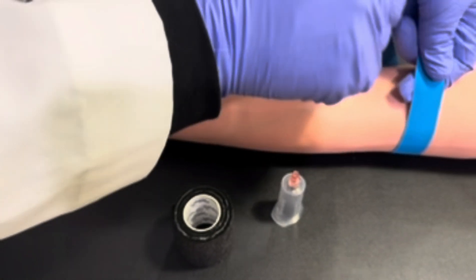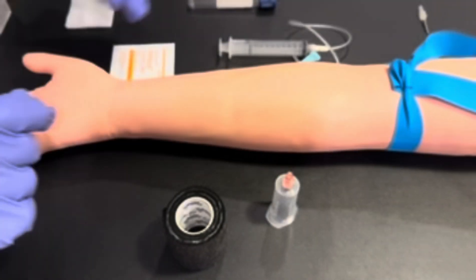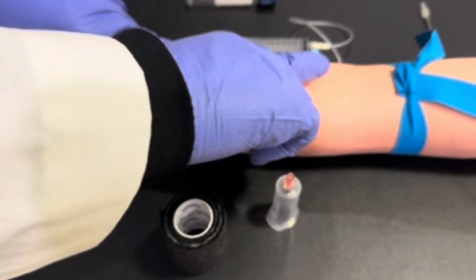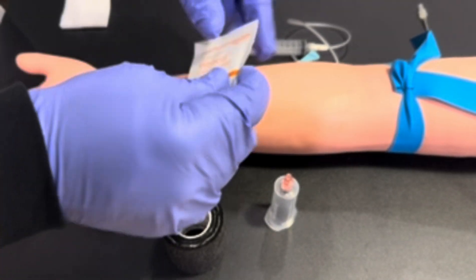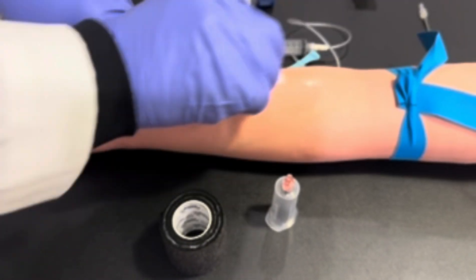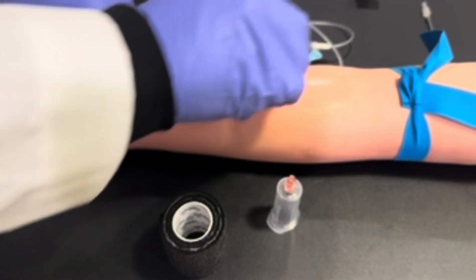Reapply the tourniquet once again, three to four inches above the site of incision. Palpate for the vein and clean the site with 70% alcohol for 20 seconds in concentric circles.